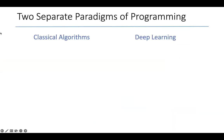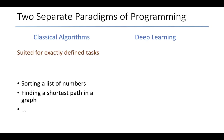We are all familiar with the two predominant paradigms of programming today. One is classical algorithms and the other is deep learning. Some have called this software 1.0 and 2.0 respectively. Classical algorithms, as we know, are suited to solve exactly defined tasks, such as sorting a list of numbers or finding a shortest path in a directed graph.